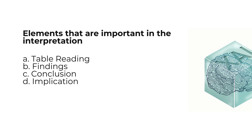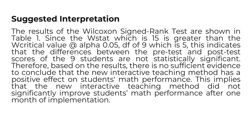There are four elements important in the interpretation: the table reading, the findings, the conclusion, and the implication. These four elements must be present in our interpretation. The suggested interpretation begins: the results of the Wilcoxon Signed-Rank test are shown in Table 1. Since the W-stat, which is 15, is greater than the W-critical value at alpha 0.05 with degrees of freedom of 9, which equals 5...